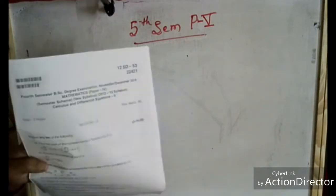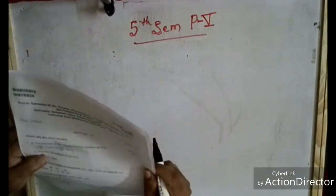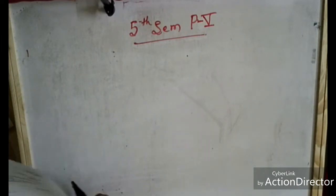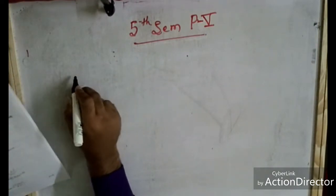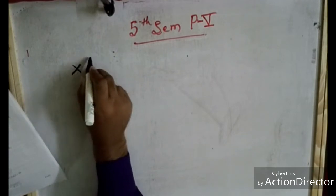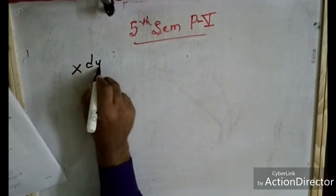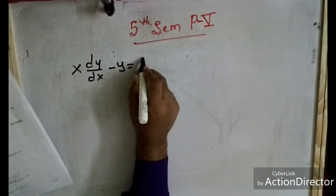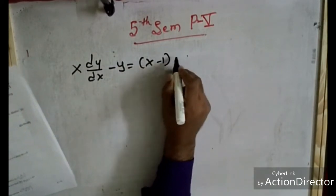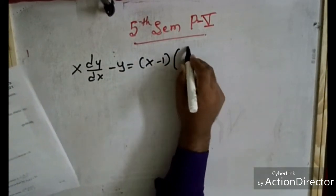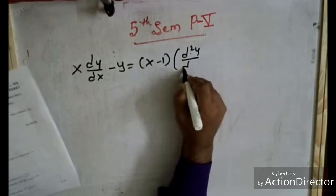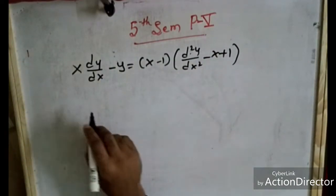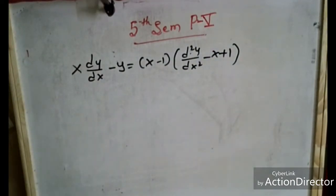The first question is: find the part of the complementary function for the differential equation. The problem is x·dy/dx minus y, which is equal to (x minus 1)·d²y/dx² minus (x plus 1)·y.